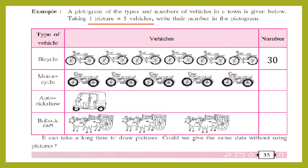Next we have motorcycle. Count the number of pictograms for motorcycle: 1, 2, 3, 4, 5. Five pictograms of motorcycle are given. These five pictograms represent how many motorcycles? Five into five is twenty-five.